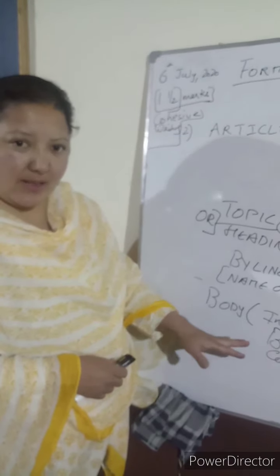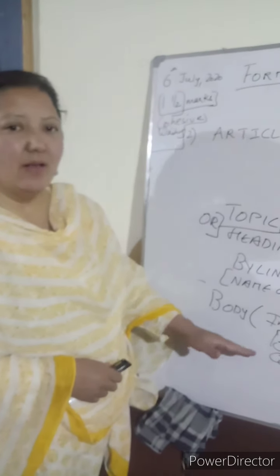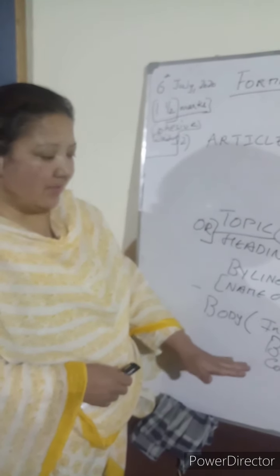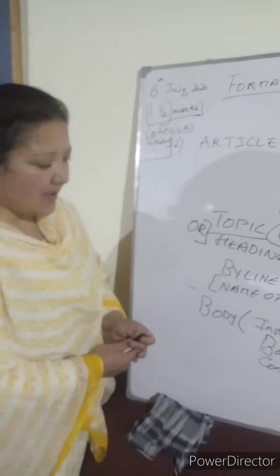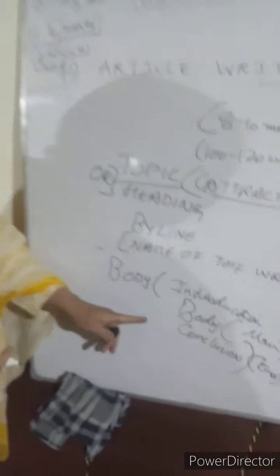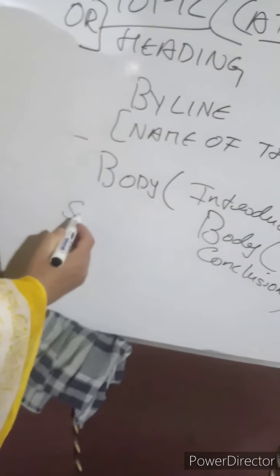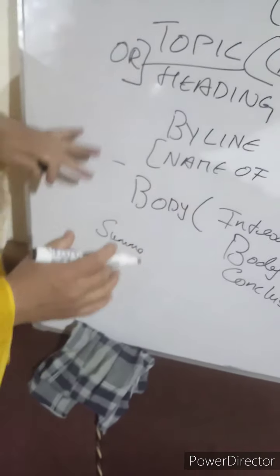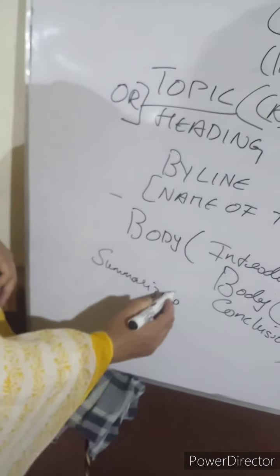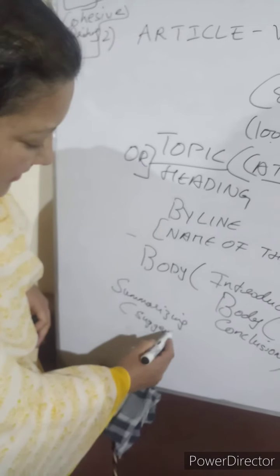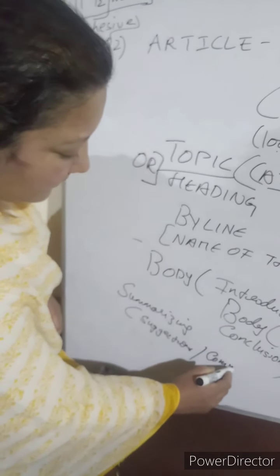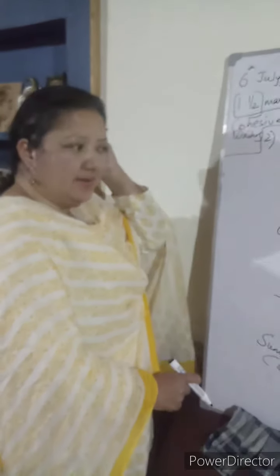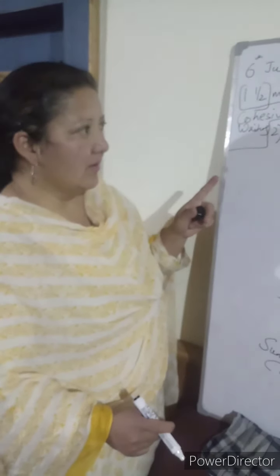When we talk about the introduction, you give an idea about your topic, then move to the next paragraph, dividing it into sub-paragraphs. After that comes the conclusion, which is the last paragraph — the end. In the conclusion, you summarize and repeat what you said, and give your suggestions or comments. This is how you write an article. This is format number two.